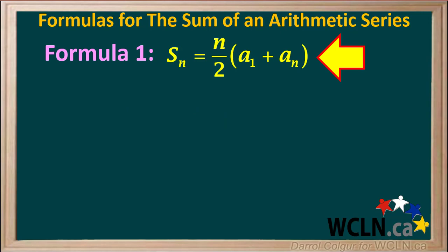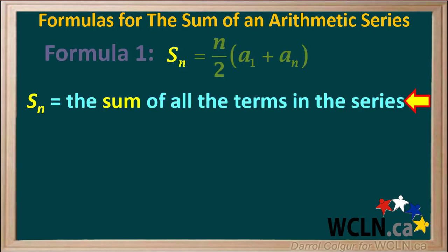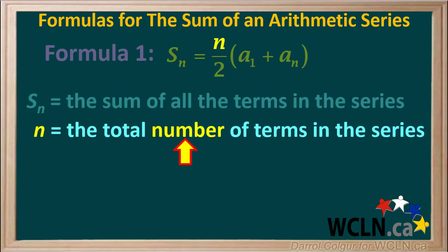The first formula we'll look at is Sn equals n over 2 times the sum of A1 plus An, or the sum of the first term and the last term. Sn is the sum of all the terms in the series. Lowercase n stands for the total number of terms in the series that we want to find the sum of.